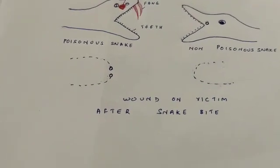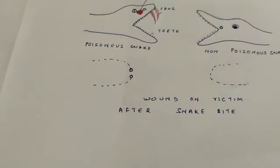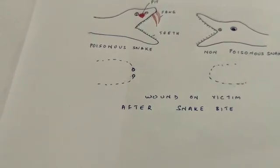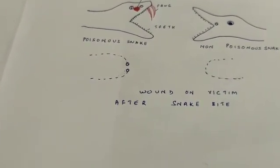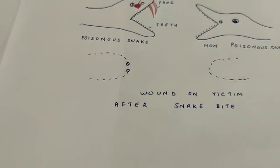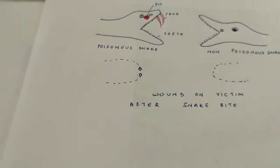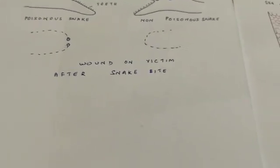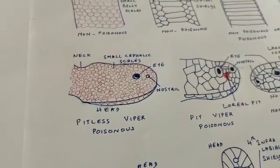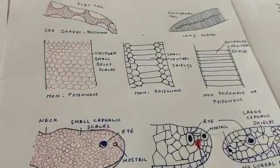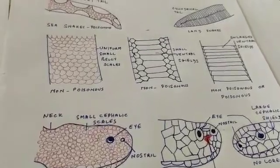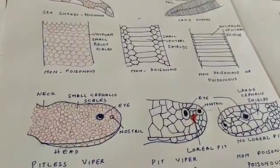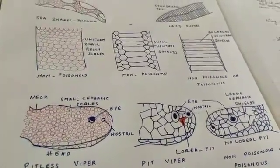Fangs are present only in venomous or poisonous snakes and are connected to the salivary or poison glands by a duct. Poison is generated only in the poisonous snakes; in non-poisonous snakes there is no poison. In today's class we have looked at the major points of difference between poisonous and non-poisonous snakes — from the flat rudder-like tail found in poisonous snakes, to a single row of caudals typically found in poisonous snakes.